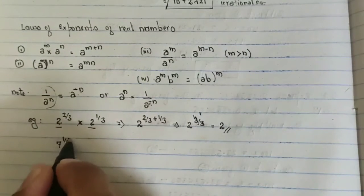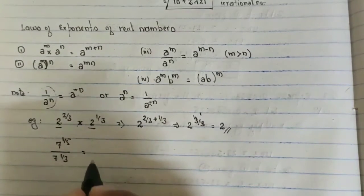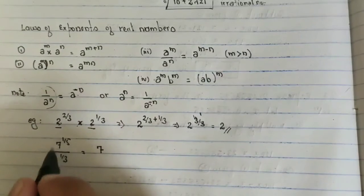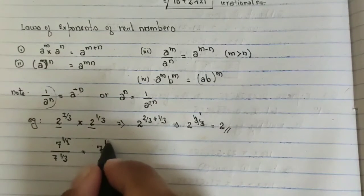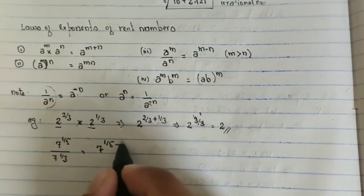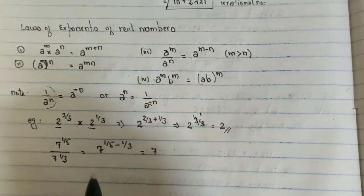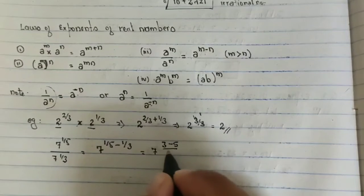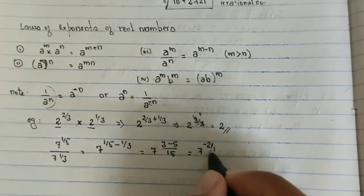Second question: 7^(1/5) divided by 7^(1/3). The base is common, so we apply the division law: 7^(m−n) = 7^(1/5 − 1/3). Since the denominators are different, we take the LCM of 5 and 3, which is 15. So we get 7^((3−5)/15) = 7^(−2/15).